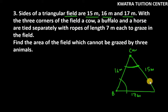And on the third end is our horse. Horse also has 7 meter rope and it can graze only this part. So now they have asked us about area of field which cannot be grazed by three animals. So these three parts will be grazed because they have tied it with 7 meter rope. So what will we do?